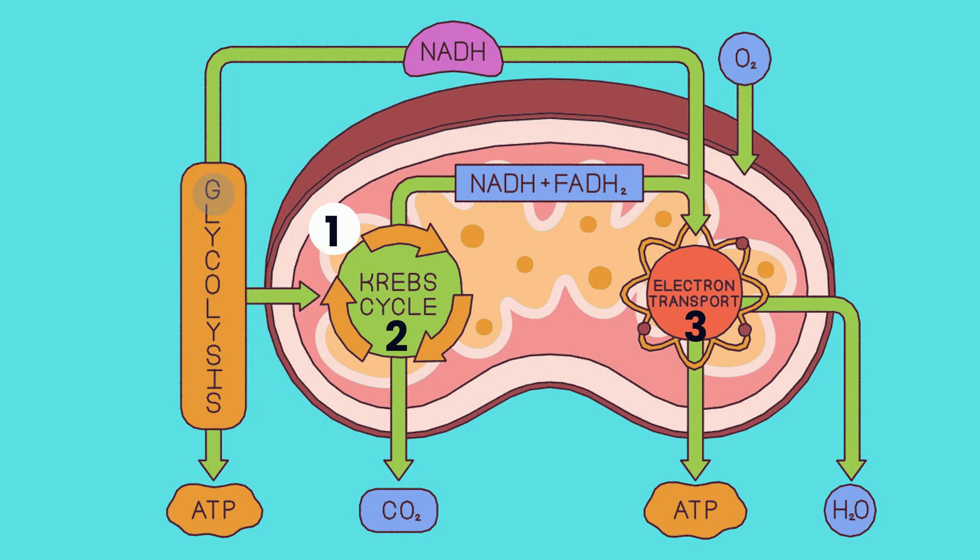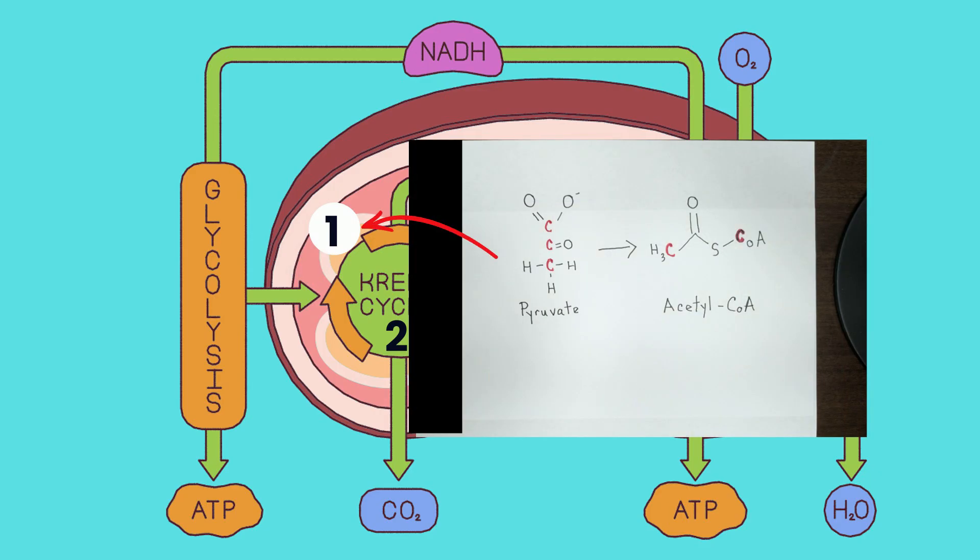First, each pyruvate, which was created in the cytoplasm, moves into the mitochondria and is changed from a three-carbon molecule to a two-carbon molecule, which is needed in the citric acid cycle, also called the Krebs cycle.